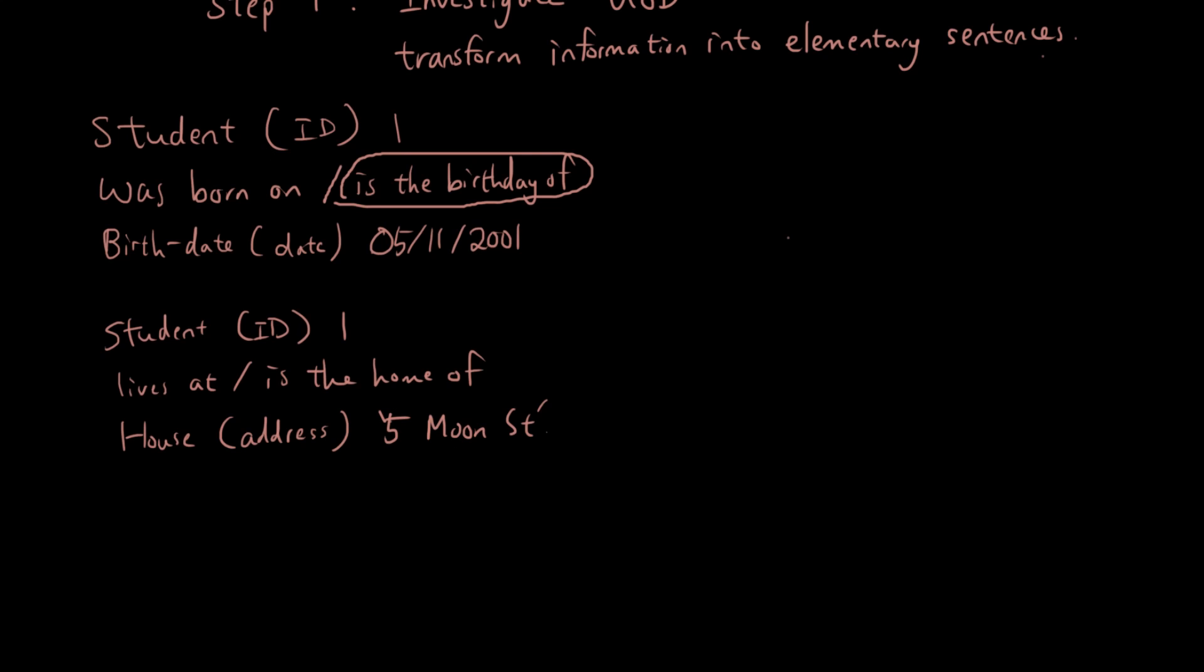Let's now pick this sentence apart and talk about the parts that make up an elementary sentence. To start off we talk about the entities in the sentence, so the student and the house. These are both entities.